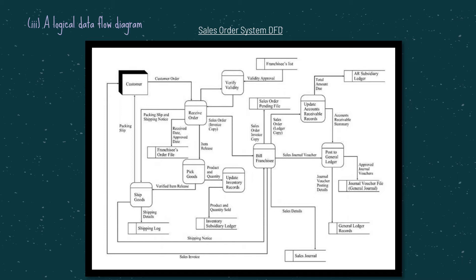The accounts receivable clerk updates the computerized debtor's subsidiary ledger and prints a copy of the debtor's summary, which is sent to the general ledger executive. The ledger copy is kept on file. The general ledger clerk keys in the summary details into the computer to update the debtor and inventory control accounts, and finally files the documents.